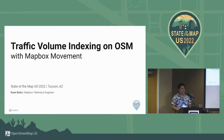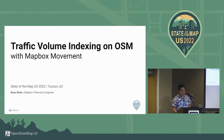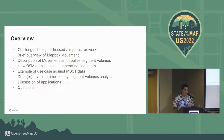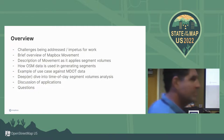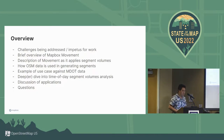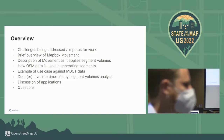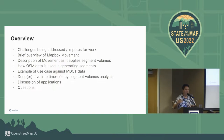Hi, I'm Kwon. I'm a developer from Mapbox, and today I'll be talking about traffic volume indexing on OSM. Here's an overview: I'll frame why we're talking about this, what the interest is, then explain a product called Mapbox Movement and how it applies to OSM data and how we pair that data with existing road segment information. I'll share an example use case, compare it to ground truth data from Michigan DOT, and show potential applications.